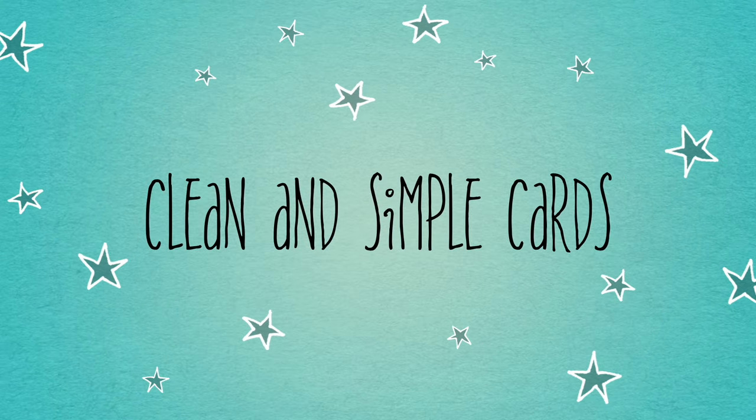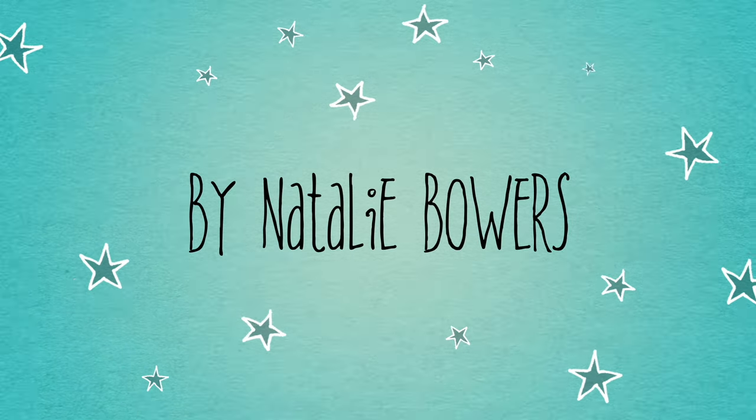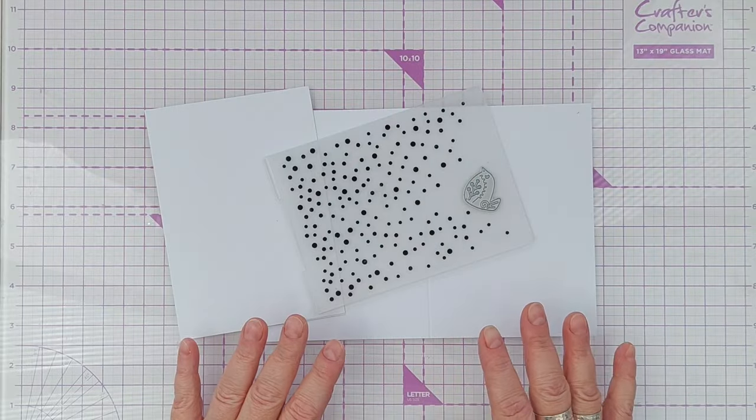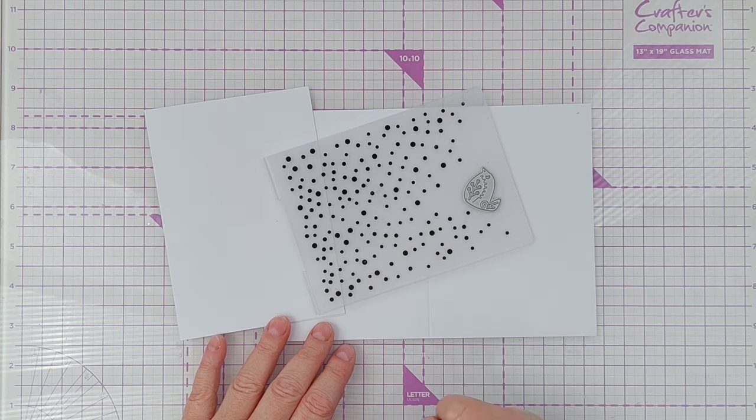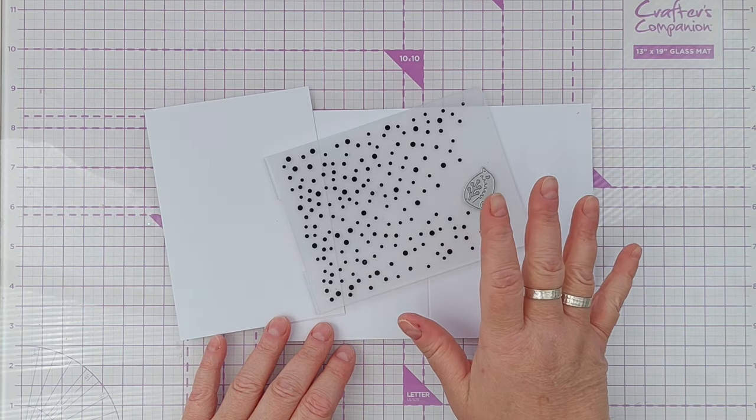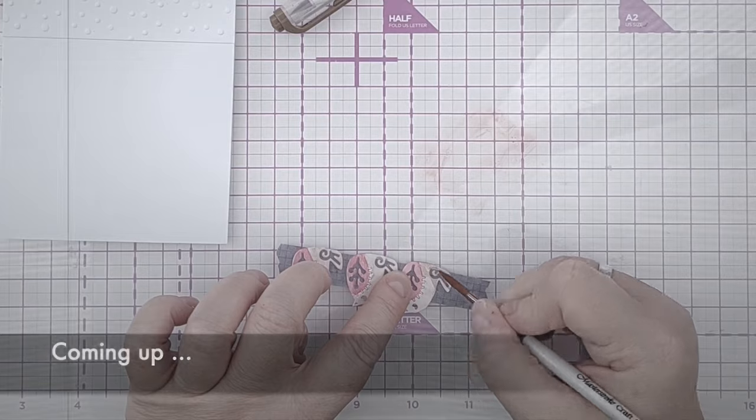Hello crafty friends, welcome to today's not just Christmas in July video. Today I'm going to use this little robin die and an embossing folder to make a really simple clean and simple Christmas card for you. Once I've done that, I'm going to show you some other non-Christmas cards that I've made with the same design idea.